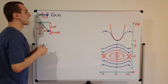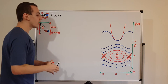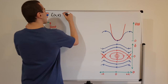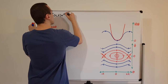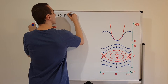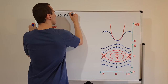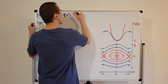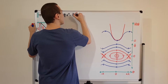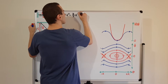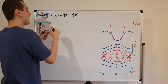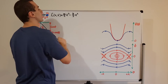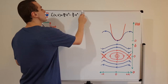The Lagrangian has the form of kinetic energy minus potential energy. The kinetic energy is one-half the mass times x-dot squared, and then we subtract the potential energy, which is one-half k times x squared. So we have x-dot squared for kinetic energy and x squared for potential energy.